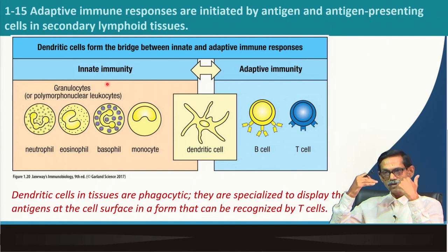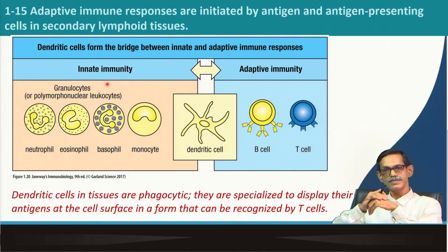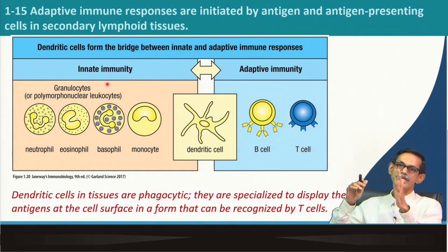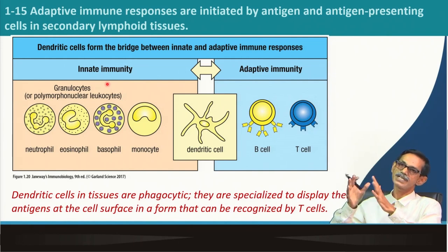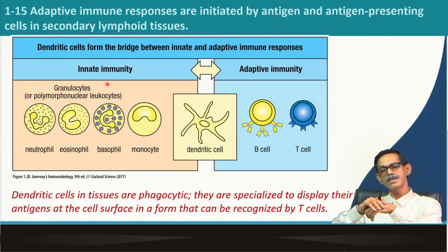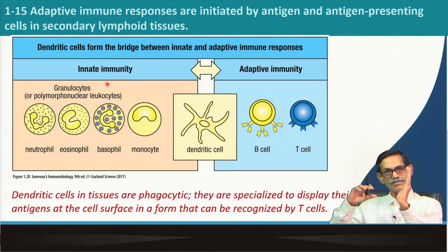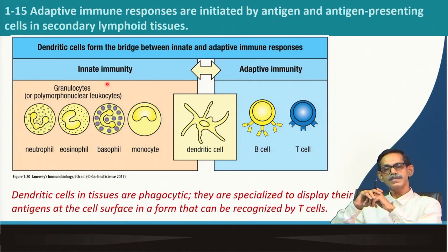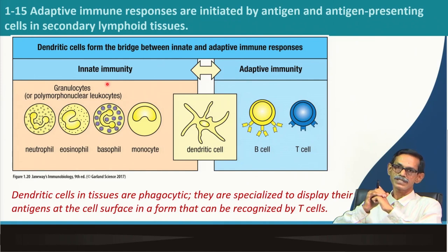There are three types of antigen presenting cells in the immune system: dendritic cells, macrophages, and B lymphocytes. They not only perform their own immune functions — like killing pathogens or producing antibodies — but also present antigen to T cells. B cells produce antibodies but at the same time present antigen to T cells. Macrophages eat bacteria and kill them while also presenting antigen. These three cell types — dendritic cells, macrophages, and B cells — are called antigen presenting cells, or professional antigen presenting cells.